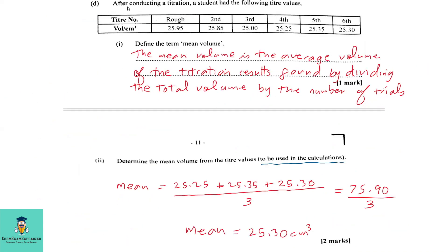To Part D: After conducting a titration, a student had the following titer values. We have a rough reading, then second, third, fourth, fifth, and sixth readings. Normally, you do multiple titrations for accuracy, and you want to make sure values are within plus or minus 0.10 cm³. Part D1: Define the term mean volume. The mean volume is the average volume of the titration results, found by dividing the total volume by the number of trials.